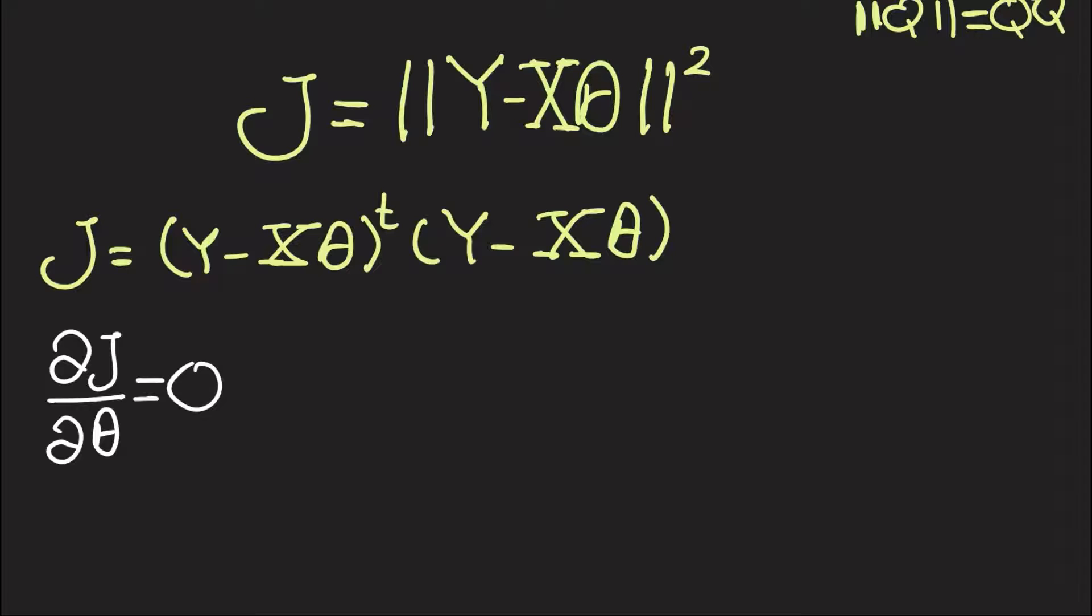So recall from the video of differentiating scalars, because this thing is a scalar, with respect to vectors, that the partial derivative of Q transpose Q with respect to some vector theta is 2Q transpose times partial Q over partial theta.